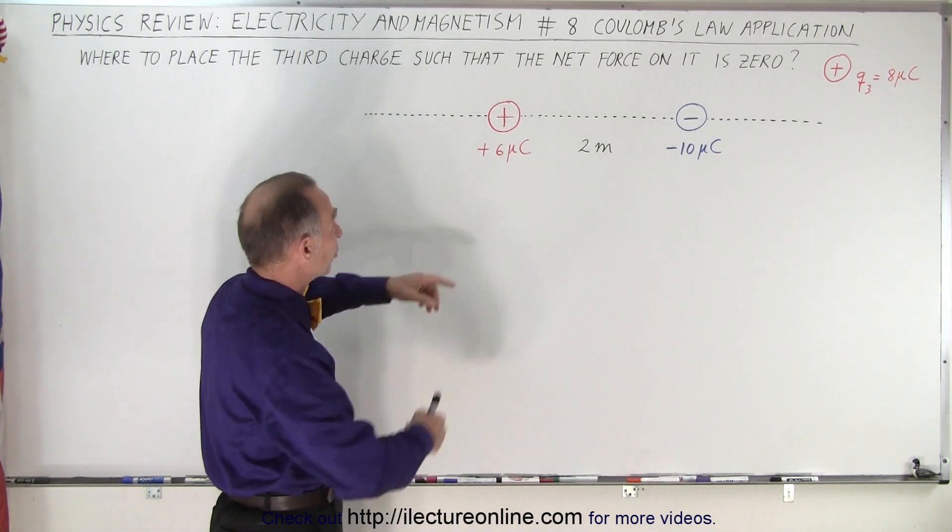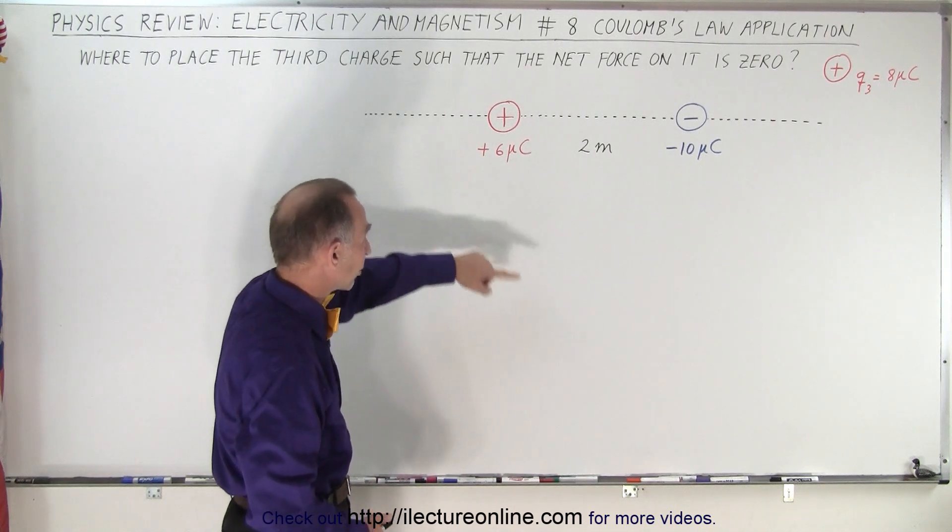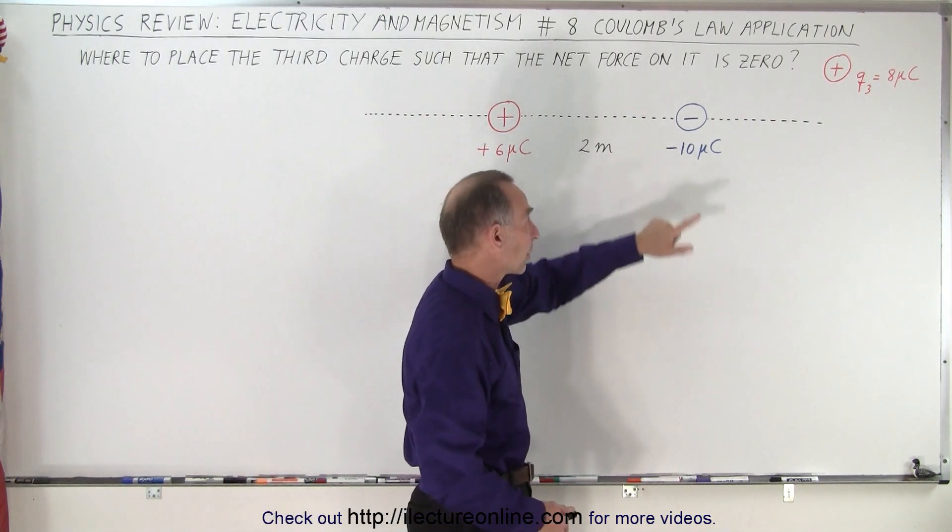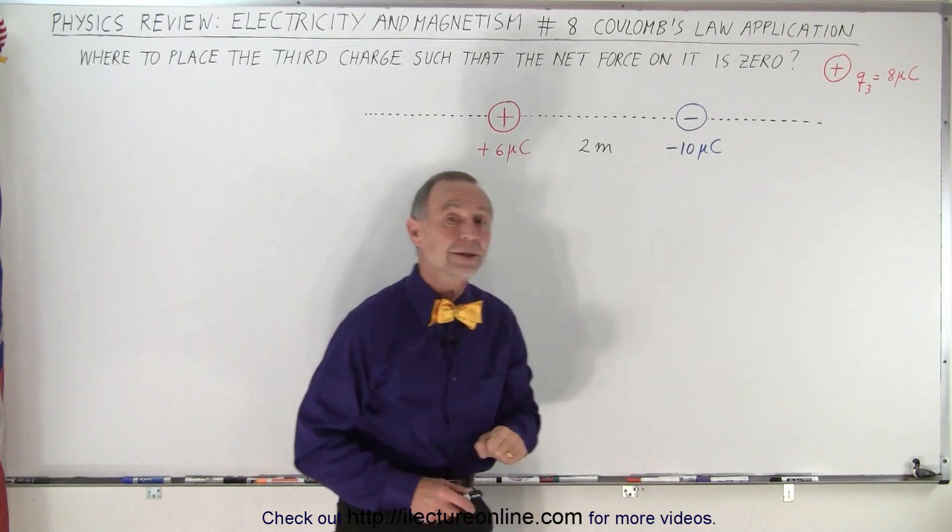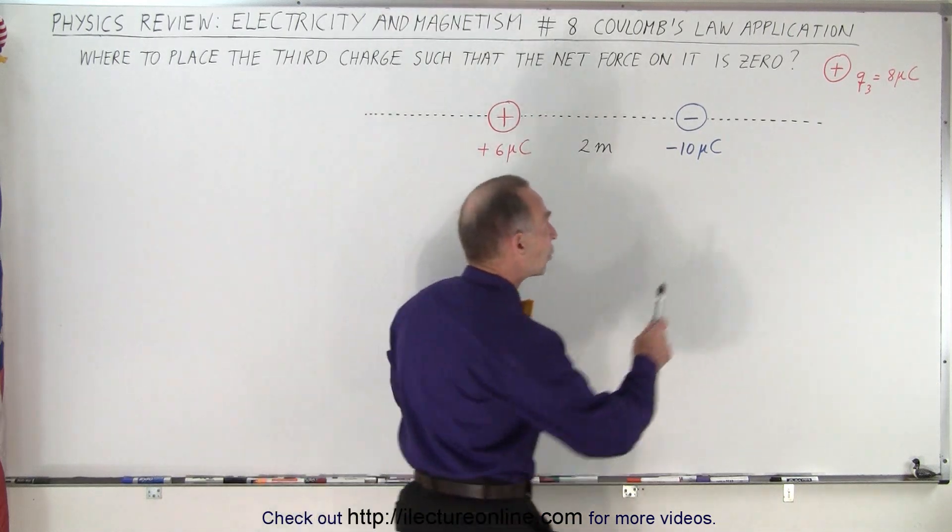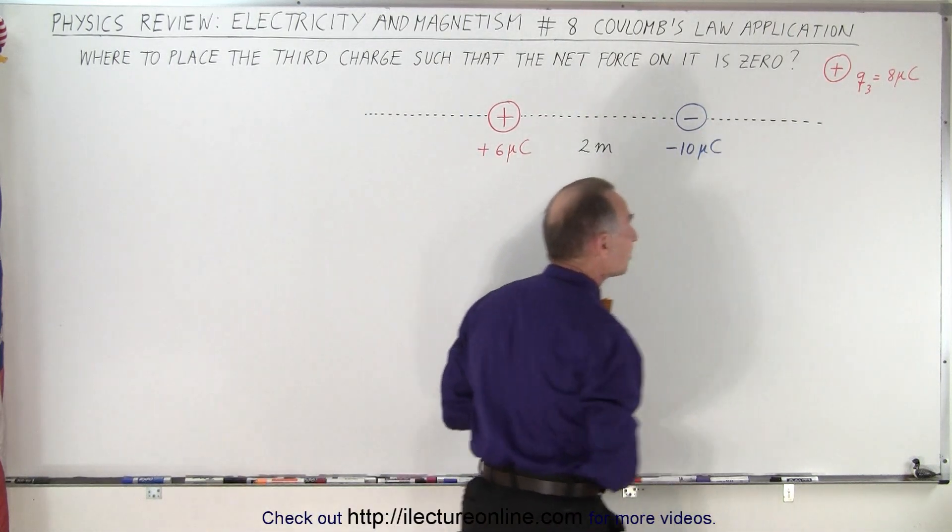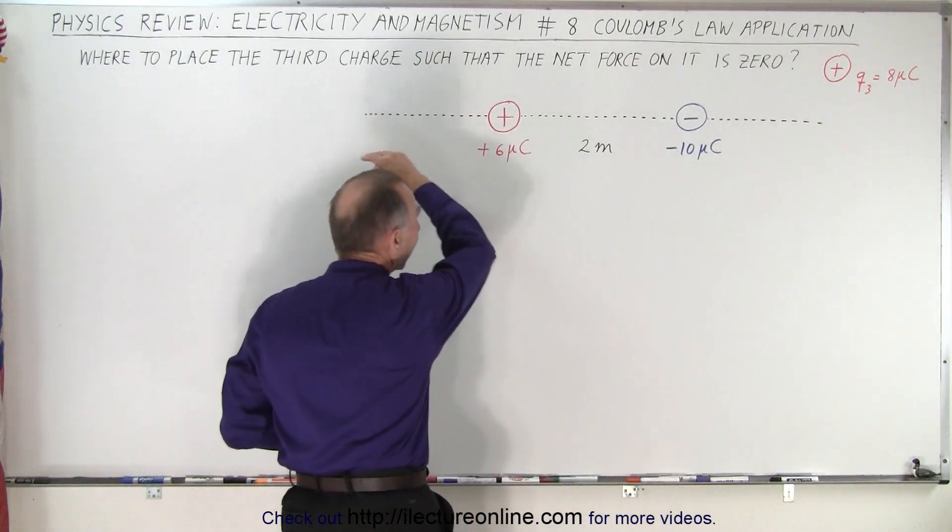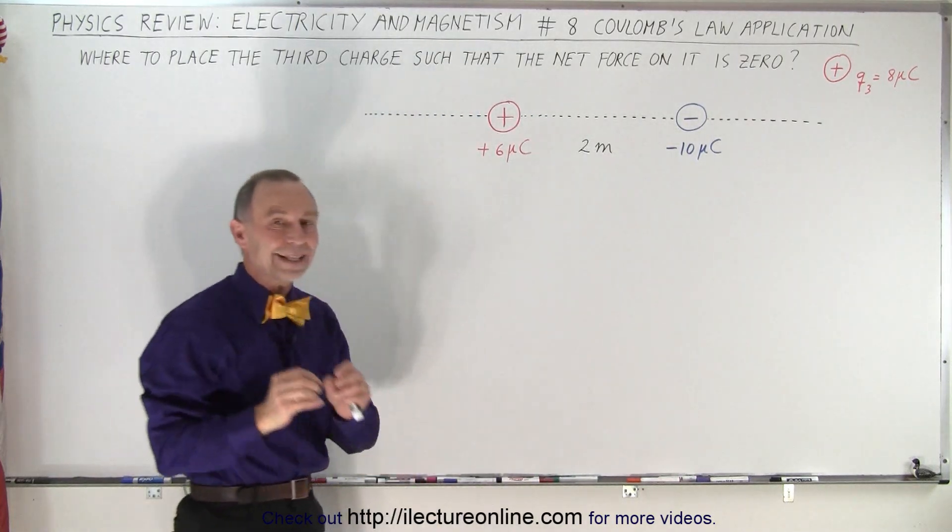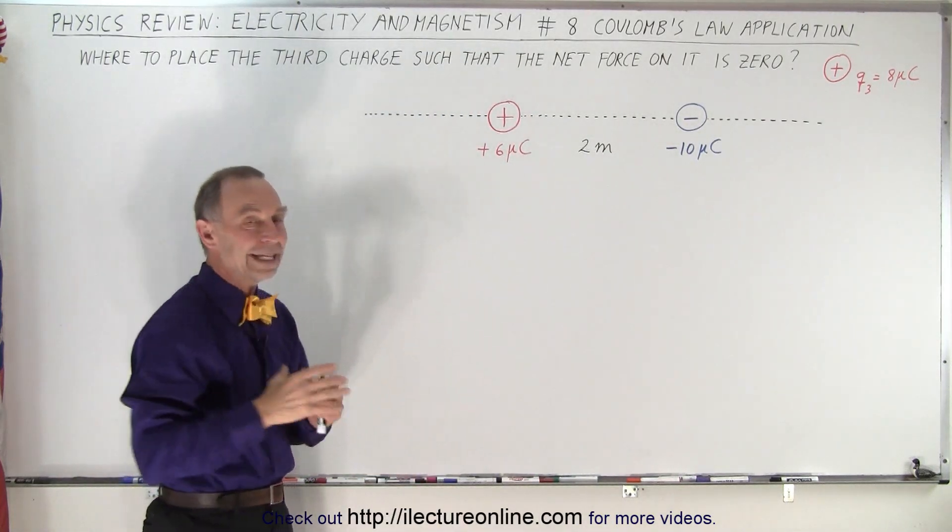Let's say we have two charges: a positive charge of 6 microcoulombs, a negative charge of minus 10 microcoulombs, 2 meters apart. And where should we put a third charge of positive 8 microcoulombs on the line connecting the two, so that the net force on that third charge equals zero?